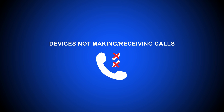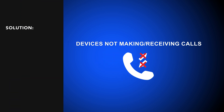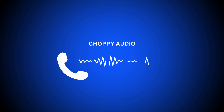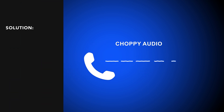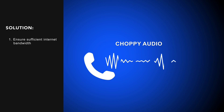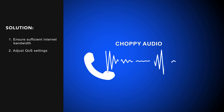Third, we have devices not making and/or receiving calls. Solutions include turning off SIP ALG in your router and updating your VoIP application. Number four, choppy audio, which can make conversation unintelligible. The solution is to ensure sufficient internet bandwidth, adjust QoS settings, and consider an ethernet connection.